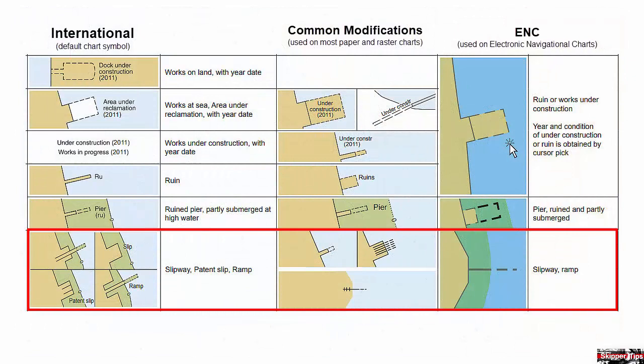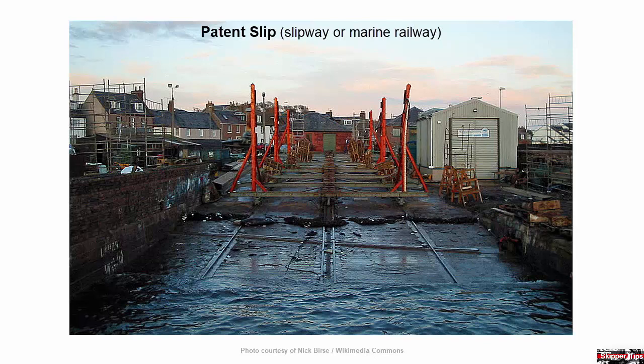Large vessels or ships are sometimes launched on a patent slip, also called a slipway or marine railway. It's a ramp with tracks that extends well out into the water. Much of the platform will be submerged, so you want to use extreme caution when navigating near a slipway. Common boat ramps have a similar design without the tracks or rails.